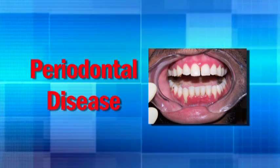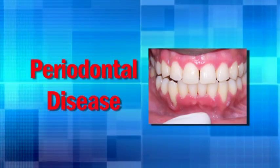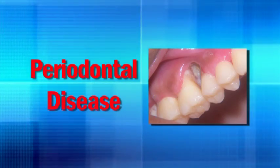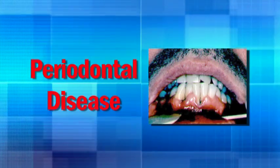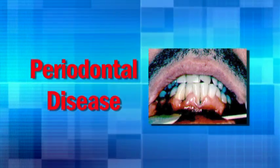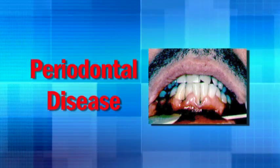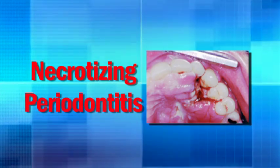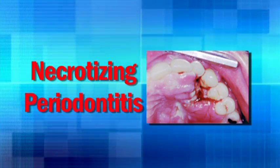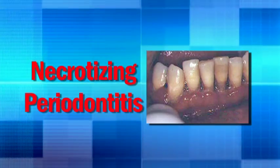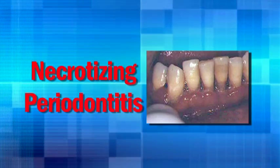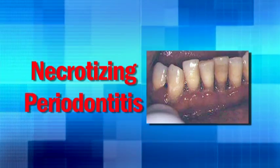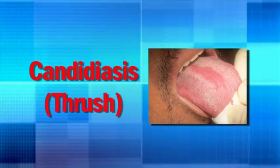Periodontal disease, also known as gum disease, is an infection that attacks the bone and gums that support the teeth. People living with HIV are at greater risk and may face more severe and rapid forms, including linear gingivitis erythema and necrotizing ulcerative periodontitis. Necrotizing periodontitis is characterized by rapid destruction of soft tissue, severe pain, loosening of teeth, bleeding, fetid odor, ulcerated gingival papilla, and rapid loss of bone and soft tissue. Patients often describe it as deep jaw pain.